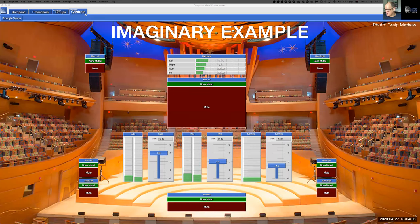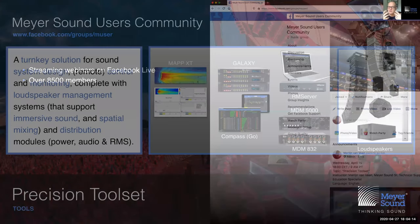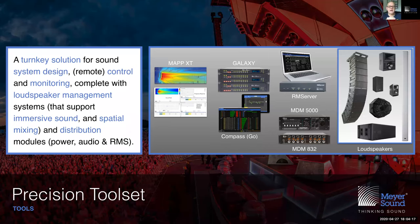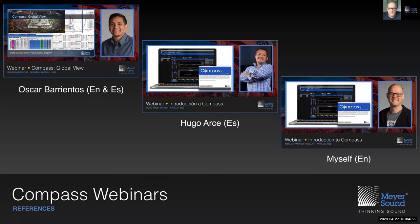Welcome to those people as well. We've talked many times about the Meyer Sound Precision Toolset. Compass is one of those pillars in our workflow, delivering turnkey solutions from design to deployment — including signal distribution, power distribution, and RMS. Today we're going to talk about control groups and control pages, a key property of Compass.